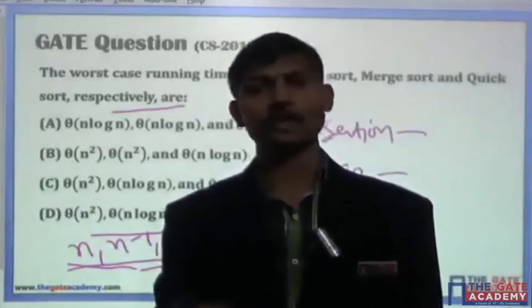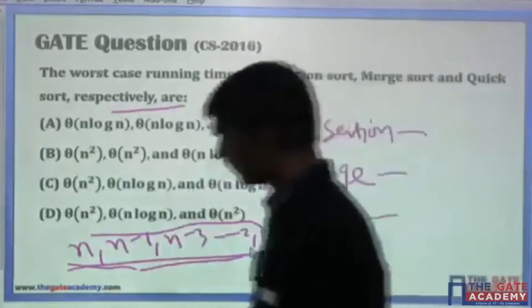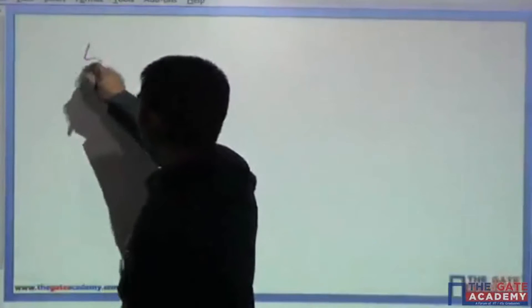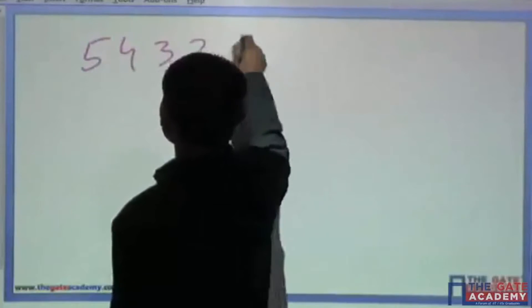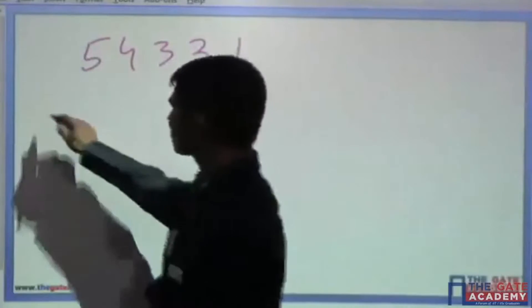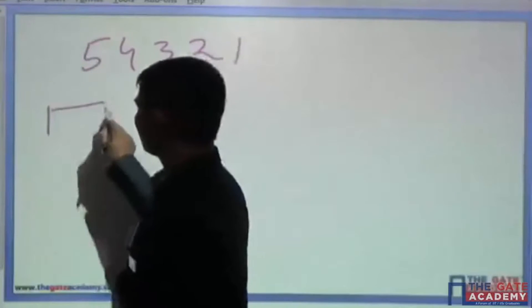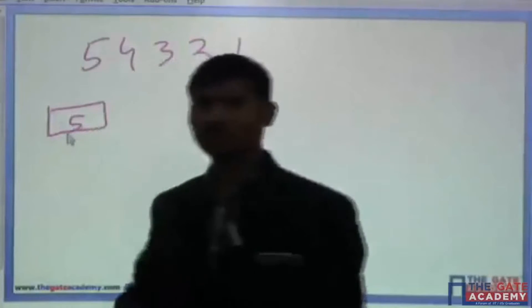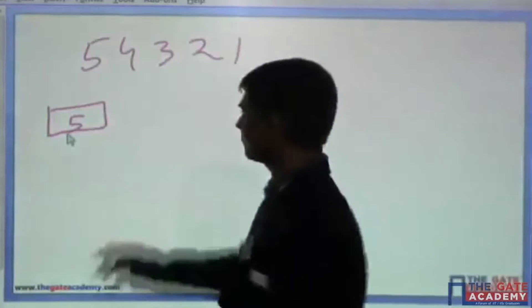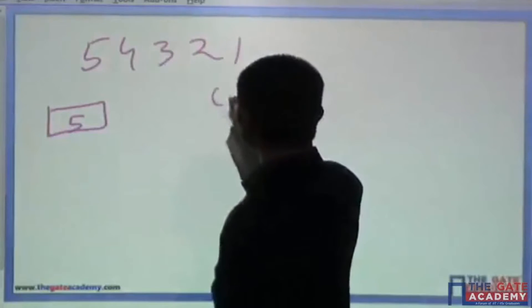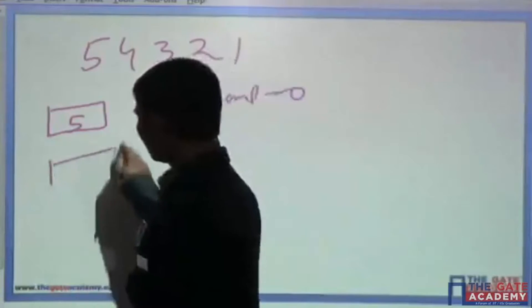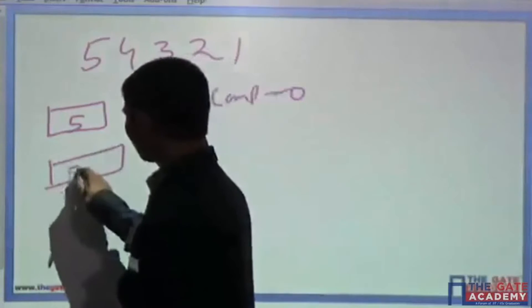Let me take a simple example to prove this point. Suppose the list is 5, 4, 3, 2, 1. The logic of insertion sort says: the first element is 5 — when there is just a single element, there is no comparison and no swap, so zero comparisons.